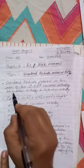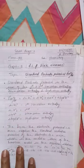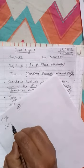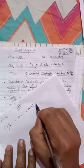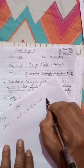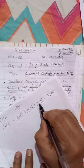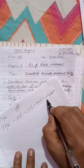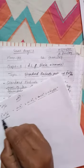Standard electrode potential is the sum of the first and second ionization enthalpy, atomization enthalpy, and hydration enthalpy. To calculate the E° value of a transition metal M²⁺/M, you have to sum: ΔᵢH°₁ + ΔᵢH°₂ + ΔₐH° + ΔhydrationH°. If you add all these values, you will get the standard electrode potential of any ion in the +2 oxidation state.